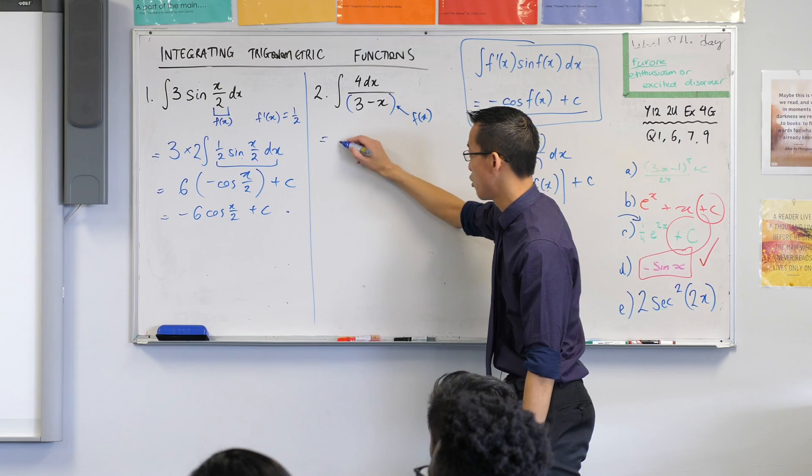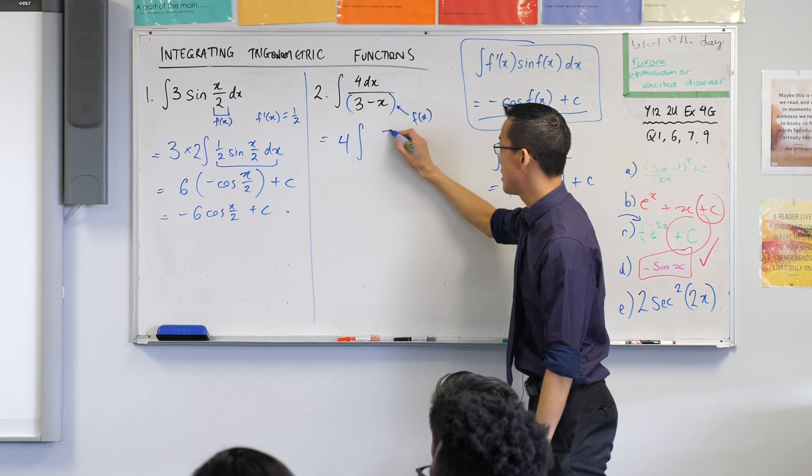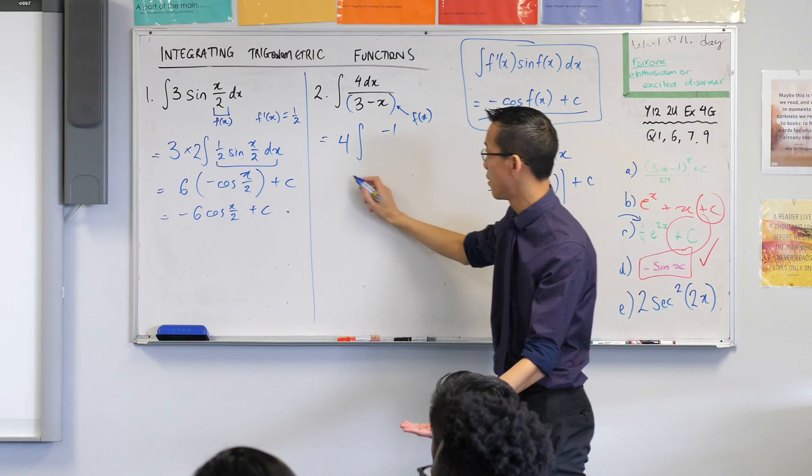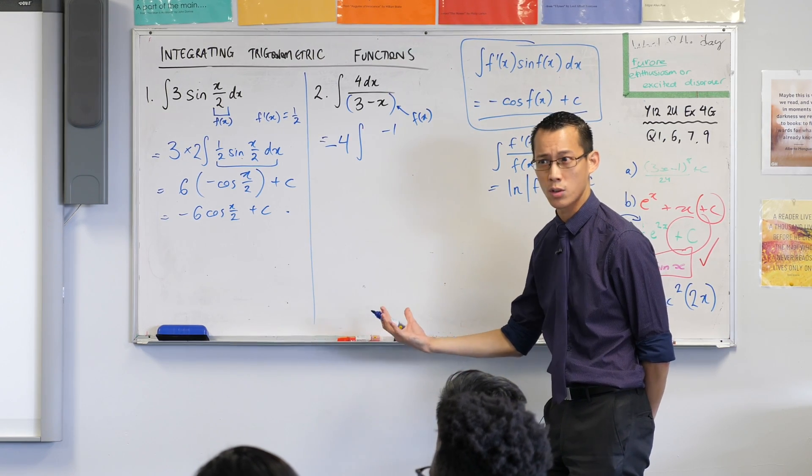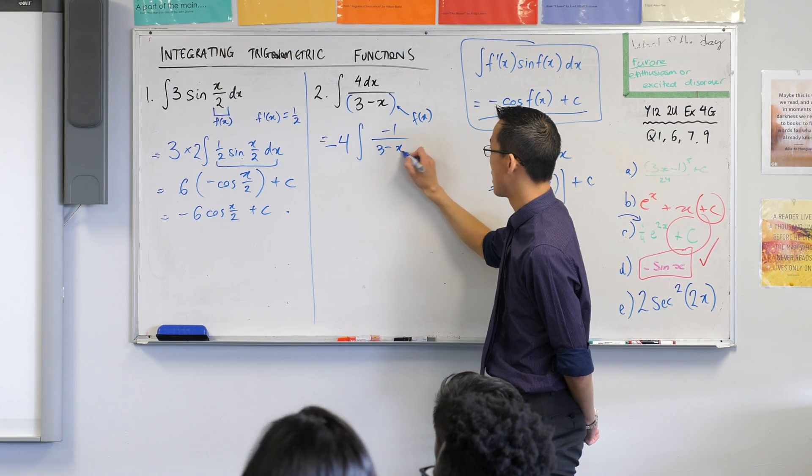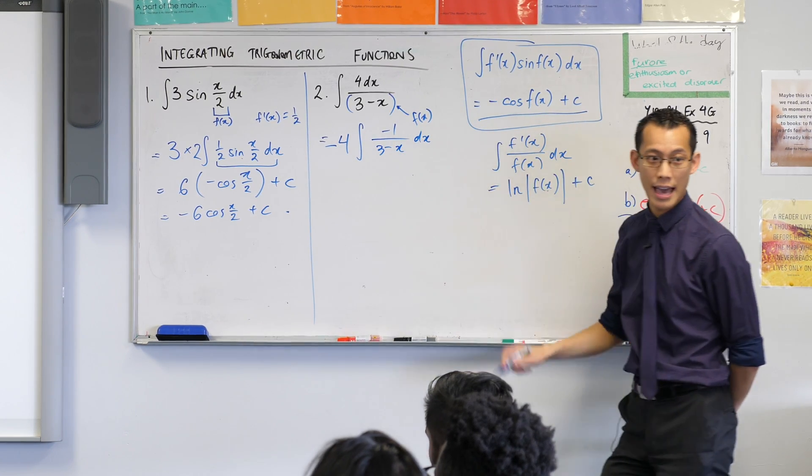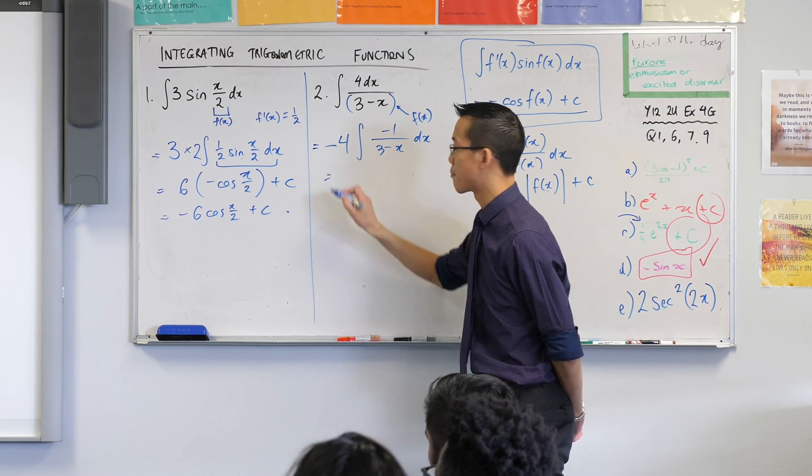That four, does it help me? Nope, so I put it outside. What I want up the top is a negative one. Well you can't just put a negative one there, so there's my negative to compensate. Do you see, you can start to do this quite quickly once you get comfortable with it. On the bottom is still that three minus x, there's the dx that I had before telling me what to integrate to, and now I'm pretty much good to go.